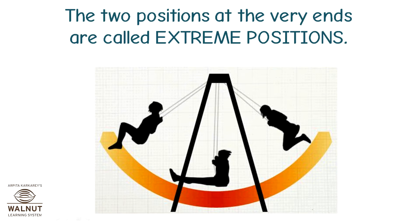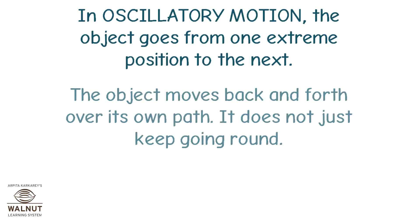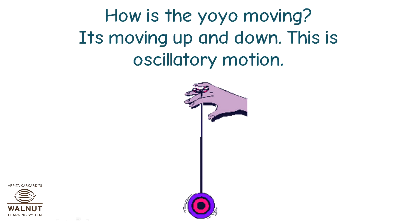The two positions at the very ends are called extreme positions. In oscillatory motion, the object goes from one extreme position to the next, moving back and forth over its own path. It does not just keep going round — this back-and-forth repetitive motion is oscillatory motion. How is the yoyo moving? It's moving up and down — this is oscillatory motion.